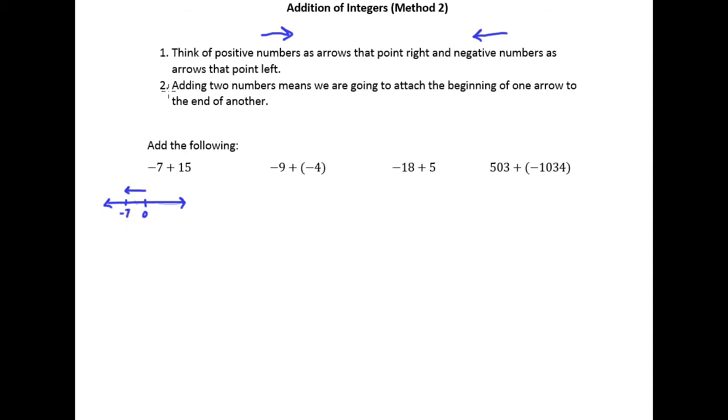Step two says that adding two numbers means we are going to attach the beginning of one arrow to the end of another. So what I want to do is attach the beginning of fifteen's arrow to the end of negative seven's arrow. Here's 15 and since 15 is positive it goes to the right.